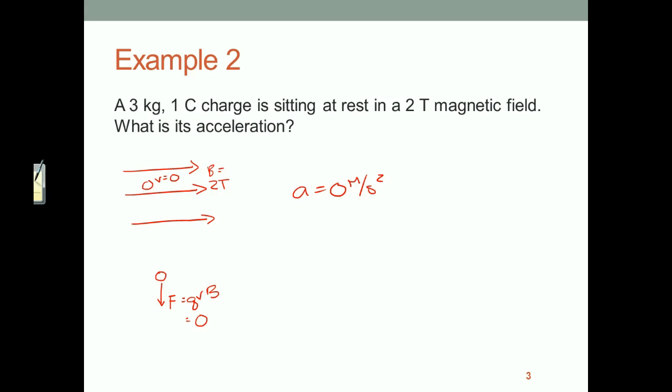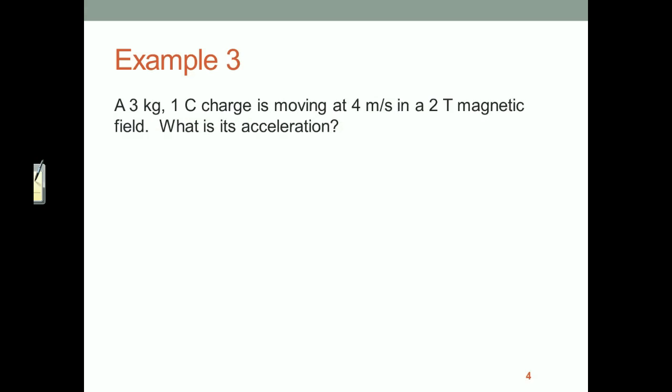Okay, enough with the trick questions. Here we have a charge actually moving in a magnetic field. It doesn't say that it is moving perpendicular, but we'll just add it at the top. Perpendicular. So a three kilogram one coulomb charge is moving at four meters per second perpendicular to a two tesla magnetic field.